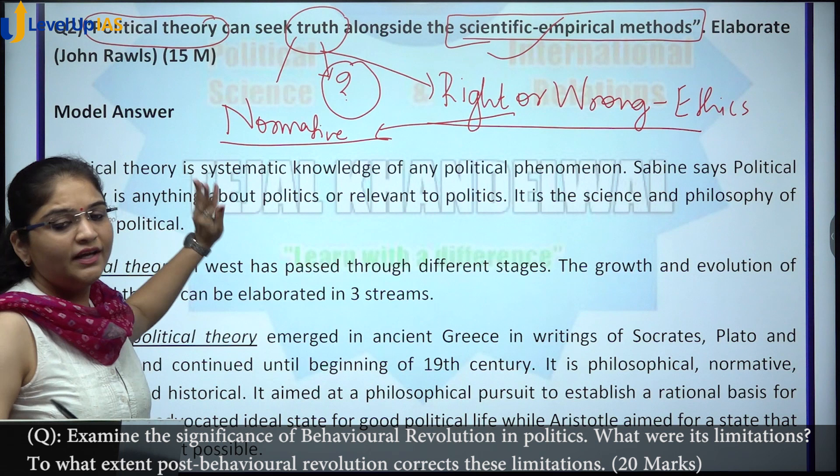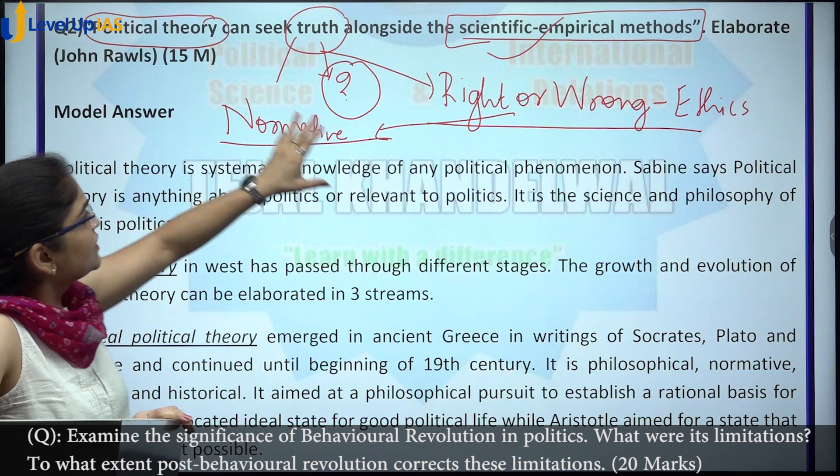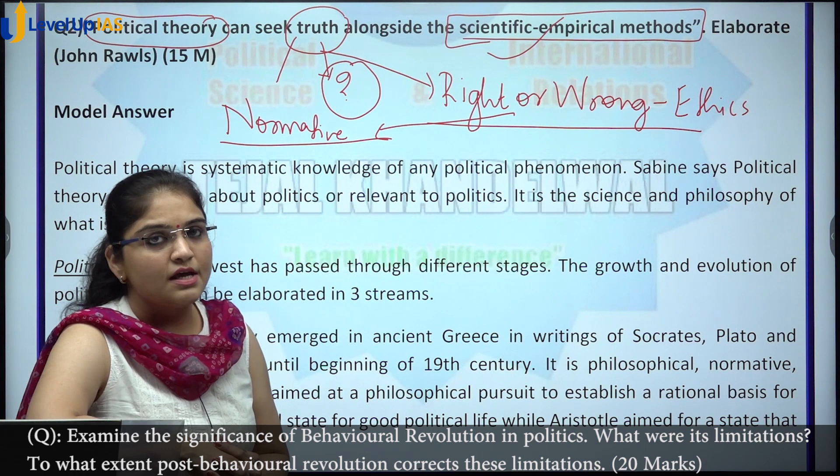The mistake most students made in interpreting this question — 'seek truth alongside scientific empirical methods' — was placing all the emphasis on behavioralism. But we had to show how there is integration of normative or traditional ways of looking at things and how the scientific character has also been brought into the study of political theory.